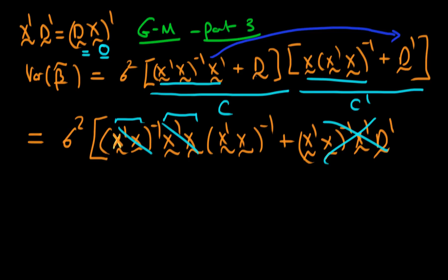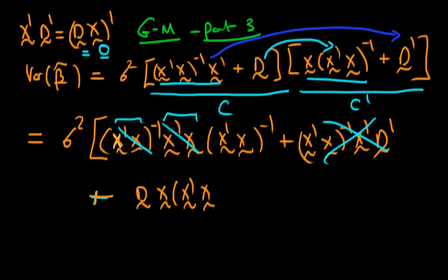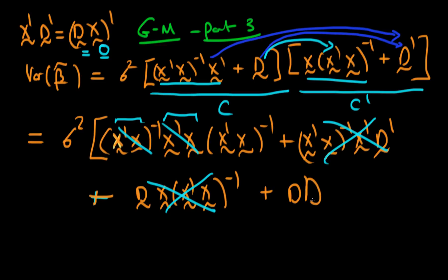That's good, we're making some progress. The third term is our matrix D times this first term in the second parenthesis, which is going to be plus DX times x primed x to the power minus 1. And again we know that DX has to be equal to 0 for beta tilde to be unbiased, so this third term also disappears. Finally we're left with our product of matrix D times D primed, which we can't simplify, so we're just left with D times D primed.